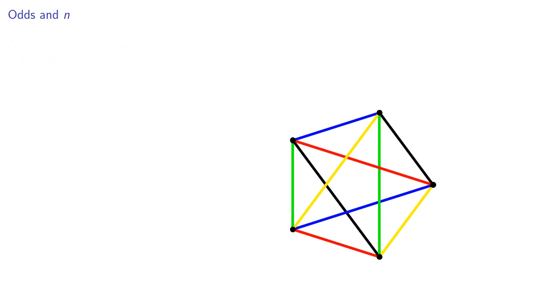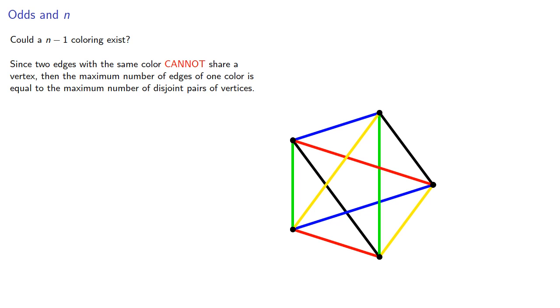Since every vertex only has n minus 1 edges incident on it, the question we could ask is: could an n minus 1 coloring exist? Since two edges with the same color cannot share a vertex, the maximum number of edges of one color is equal to the maximum number of disjoint pairs of vertices. If n is odd, we can make n minus 1 halves pairs of vertices plus one extra vertex.